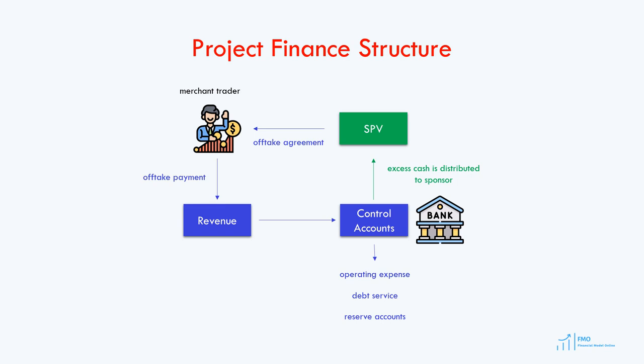The cash flow waterfall reflects the flow of cash from revenue until the payout of dividends. The control of the cash flow by lenders is achieved by means of special accounts set up by the project at the lender and controlled by lenders. Sometimes these accounts are referred to as control accounts.